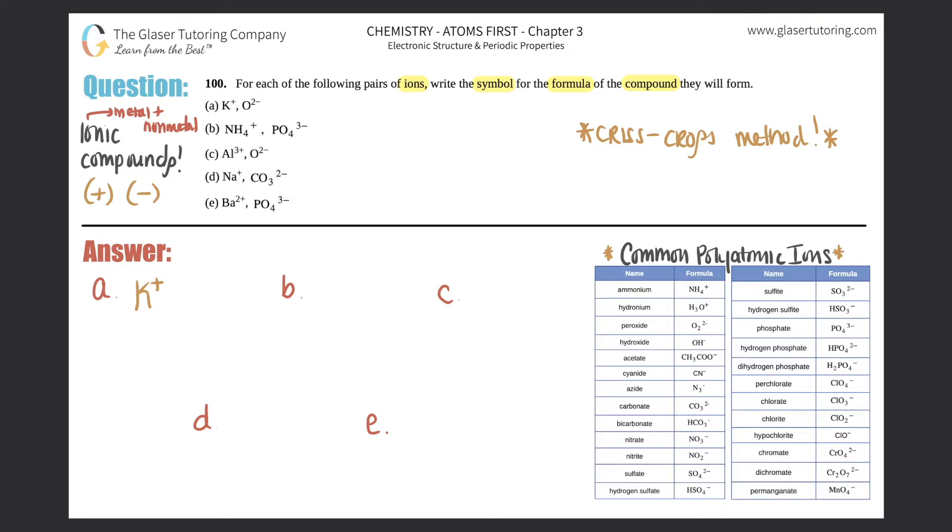For part a, we have K+. They didn't tell me plus what, so we always assume that's a one. Then we have oxygen with a 2-. The crisscross method rule states that you take the charges and that will go down to the other atom to tell you how many you have. This one crisscrosses down to tell you there's one oxygen, and then the 2- tells you that you should have two potassiums.